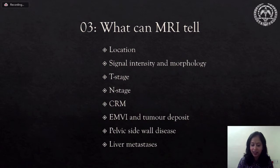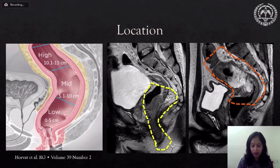This perpendicular plane is vital to make an accurate estimation of the circumferential resection margin and the T stage. The location of the rectal tumor is determined with respect to the distance from the anal verge. Depending on the distance, it is classified as low, mid, and high rectal cancer, ranging from up to 5 centimeters, 5 to 10, and 10 to 15 centimeters.